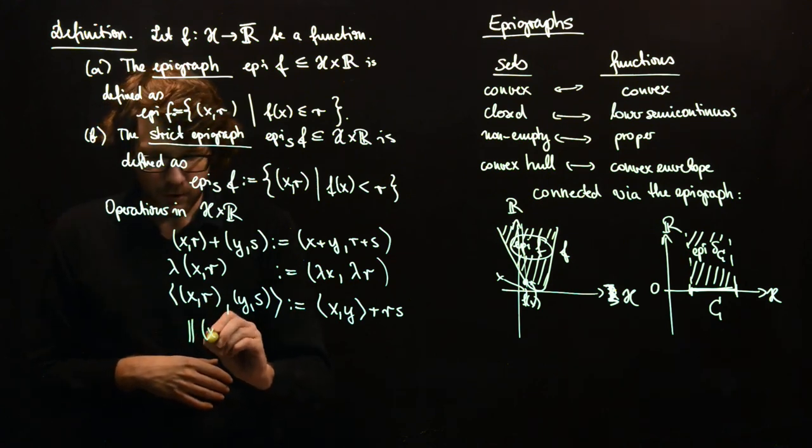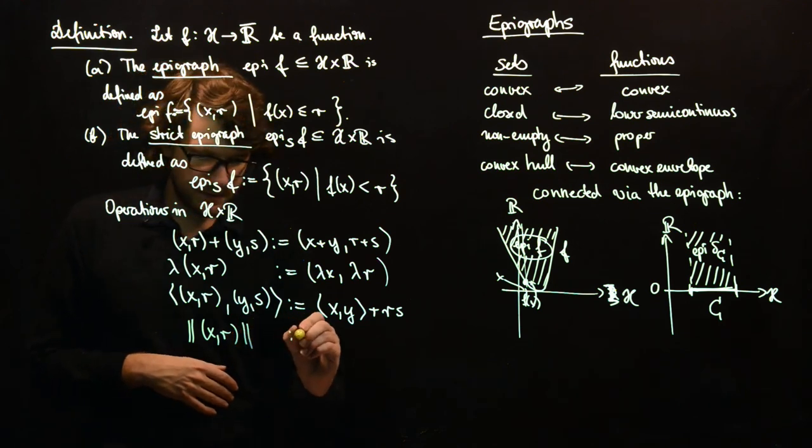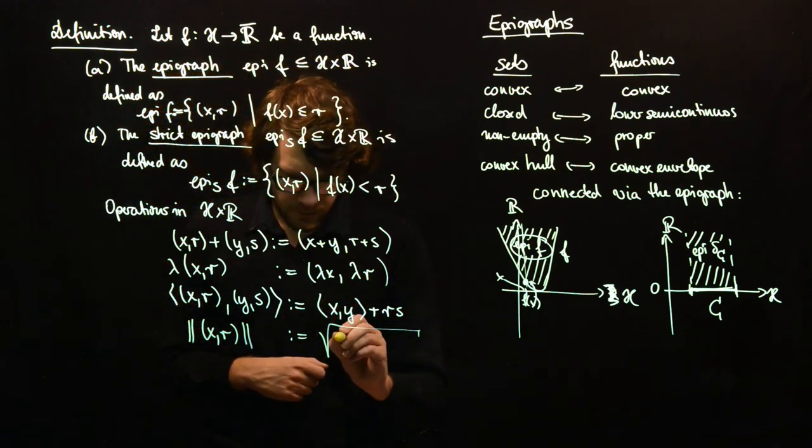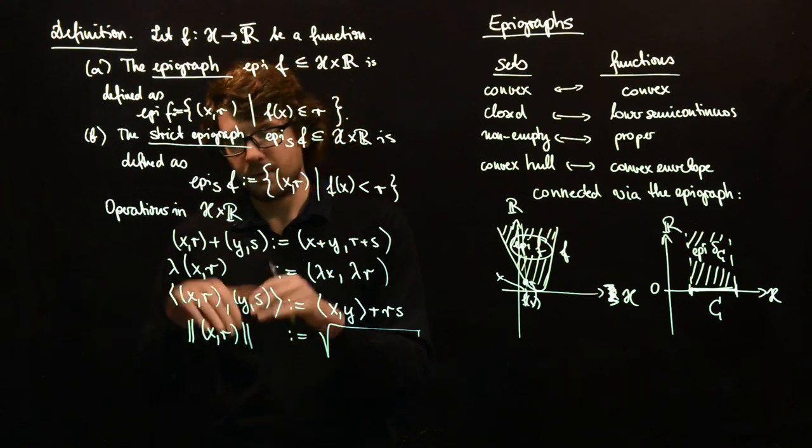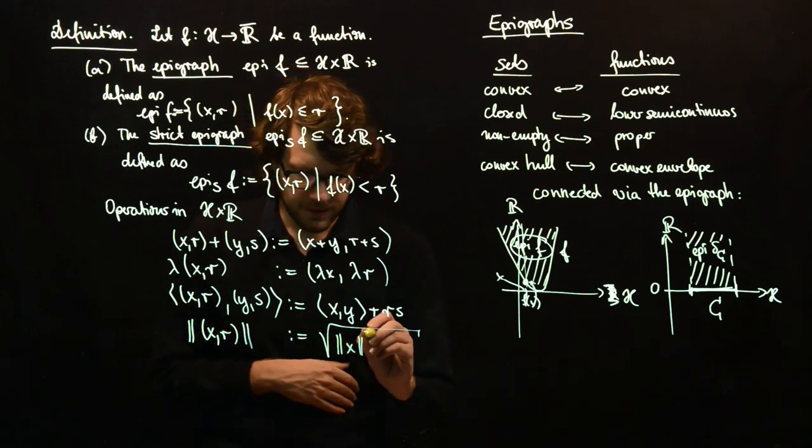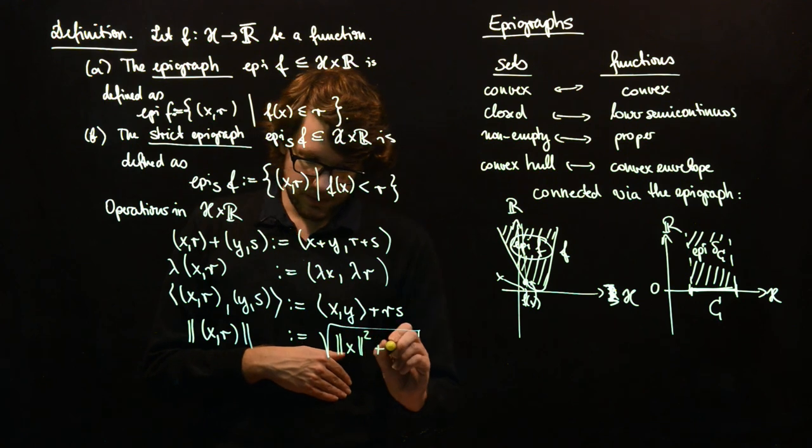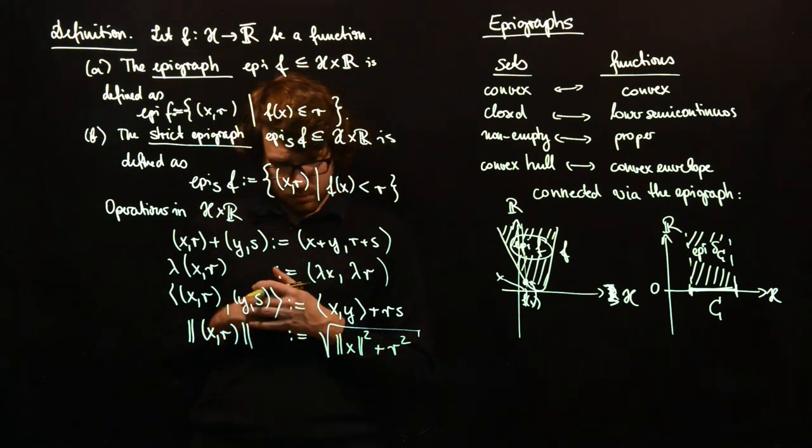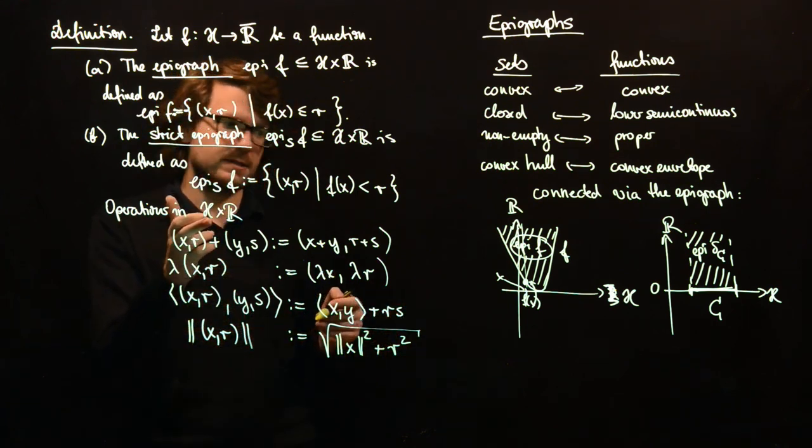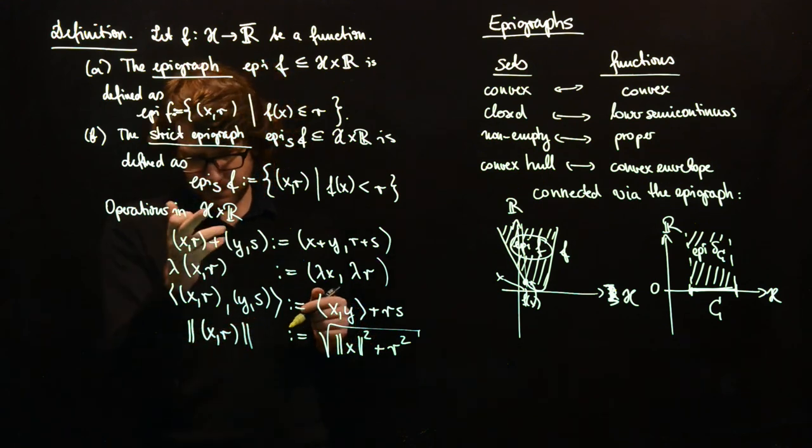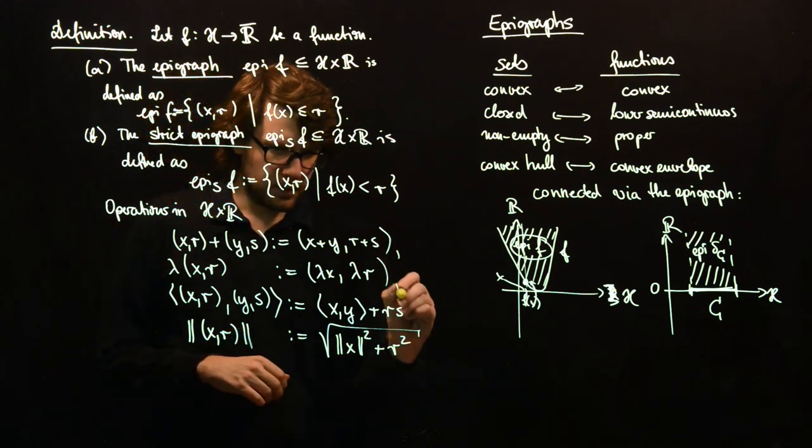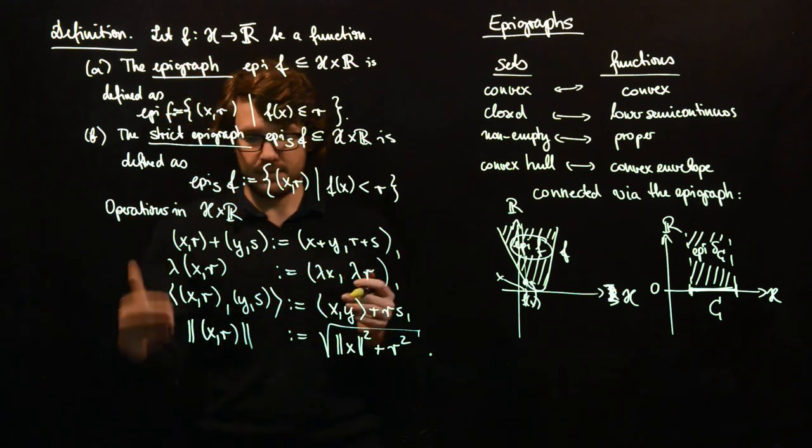the norm of such an element is then defined as usual, as the norm in the inner product with itself, which is then the square root of the inner product with itself, norm of x squared plus r squared. Just for completeness sake. That's as if you would take H equal to Rn and then you have Rn plus 1 here. But since we have not given any explicit definition, here are our operations.